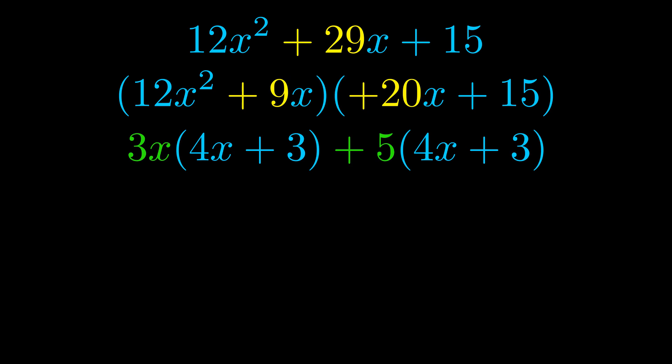Notice also how what remains inside of the parentheses is the same in both cases. The blue values are the same. Those blue values will become one of our factors and we will combine the two green values, the GCFs that we pulled out, to get the other one. And that is our fully factored equation.